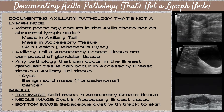So what pathology can occur in the axilla that's not an abnormal lymph node? You can have a mass in the axillary tail tissue, a mass in the accessory tissue, or you can find skin lesions such as a sebaceous cyst in the axilla. It's important to note that the axillary tail and the accessory breast tissue are composed of glandular tissue — the same type of tissue found within the breast. Any pathology that can occur in the breast glandular tissue can occur in the accessory breast tissue and the axillary tail tissue.